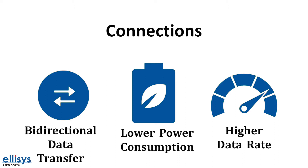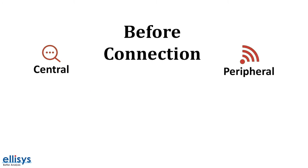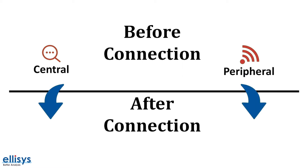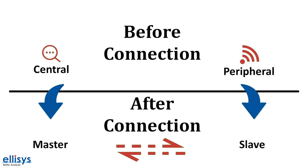Before we get into the details of how connections work, let's go over some important terminology. We already learned about the central and peripheral, and these exist before a connection is established. However, once we have a connection and the central device connects to the peripheral, the central becomes known as the master and the peripheral becomes known as the slave. The master has the responsibility of managing the connection and having the ultimate say in the connection parameters.